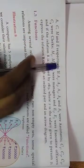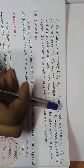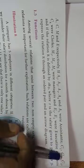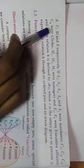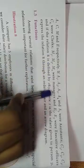If A1, A2, A3, A4 and A5 were assistants, C1, C2, C3, C4 were clerks, M1, M2, M3 were managers,